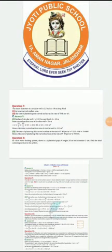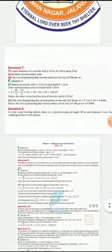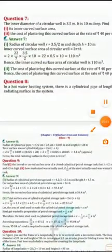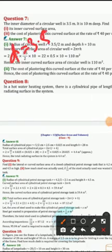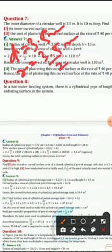Good morning students. Today I will discuss 9th class math chapter 13 exercise 13.2 question number 7. The inner diameter is given to us as 3.5 meters. The diameter is 3.5 meter, so the radius will be 3.5 over 2 meters.